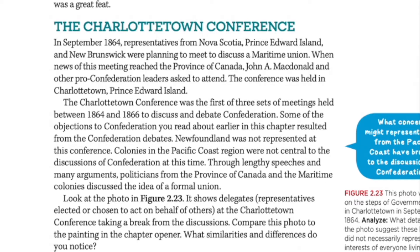The first was the Charlottetown Conference in September 1864. Representatives from Nova Scotia, PEI, and New Brunswick were planning to meet to discuss a maritime union, and when news of this meeting reached the Province of Canada, John A. MacDonald and other pro-confederation leaders asked if they could attend. The Charlottetown Conference was the first of three sets of meetings held between 1864 and 1866 to discuss confederation. Newfoundland was not represented, and colonies on the Pacific coast were not central to the discussions at this time.